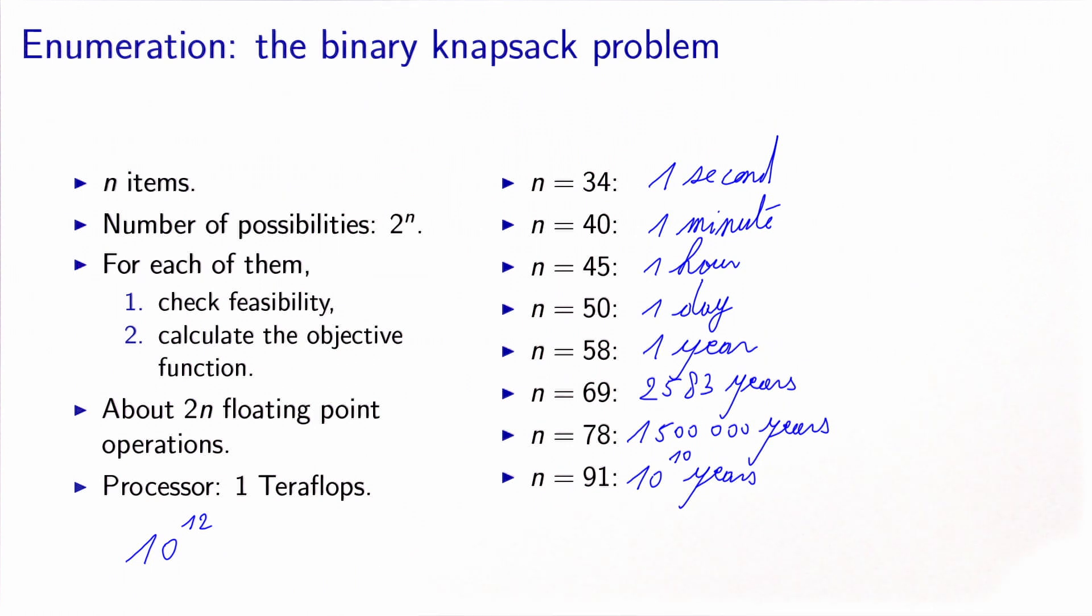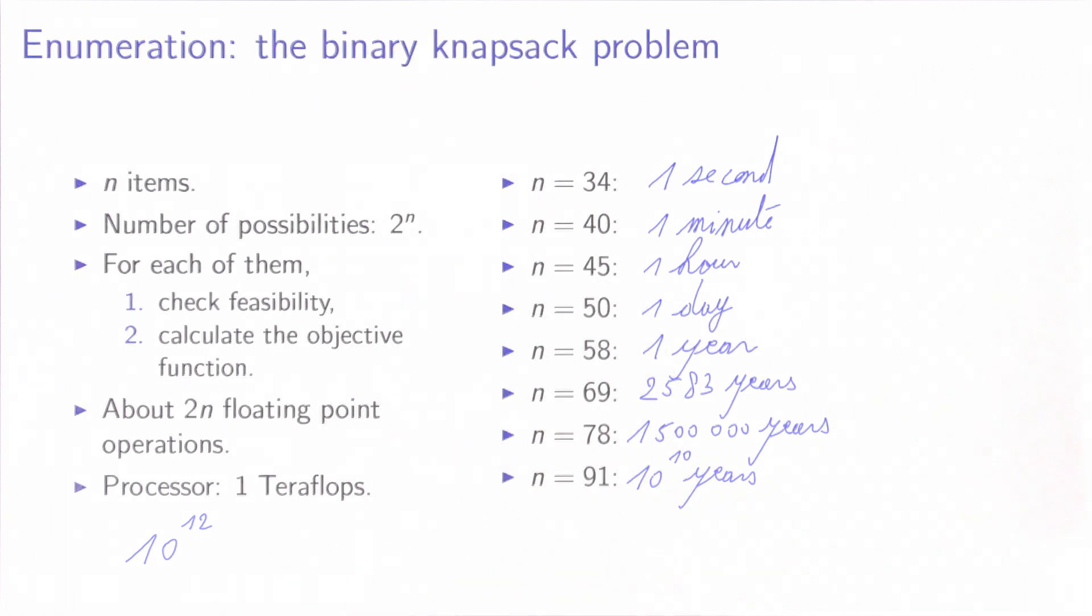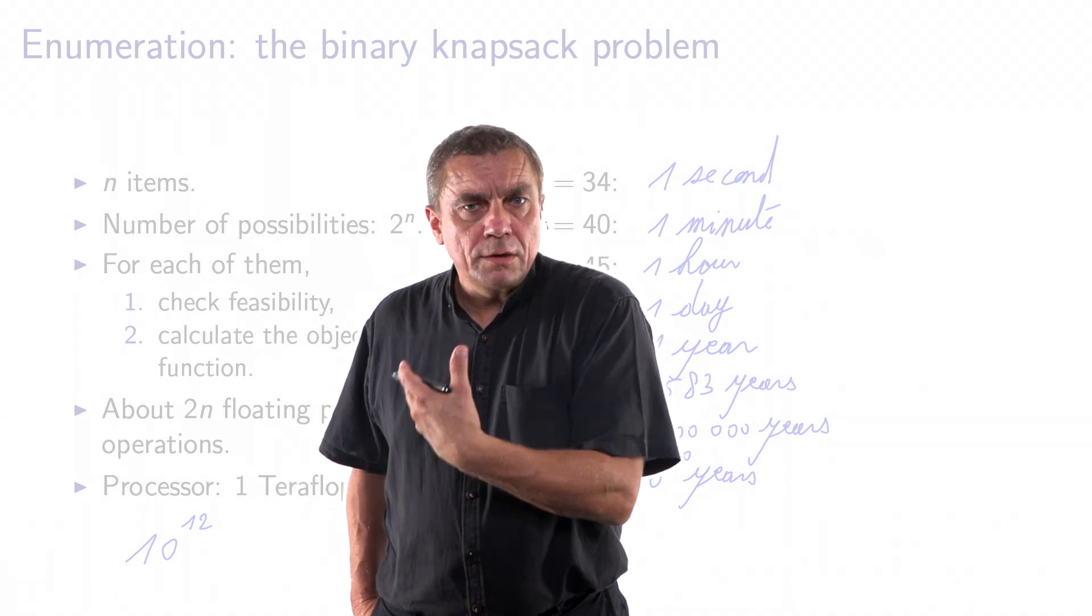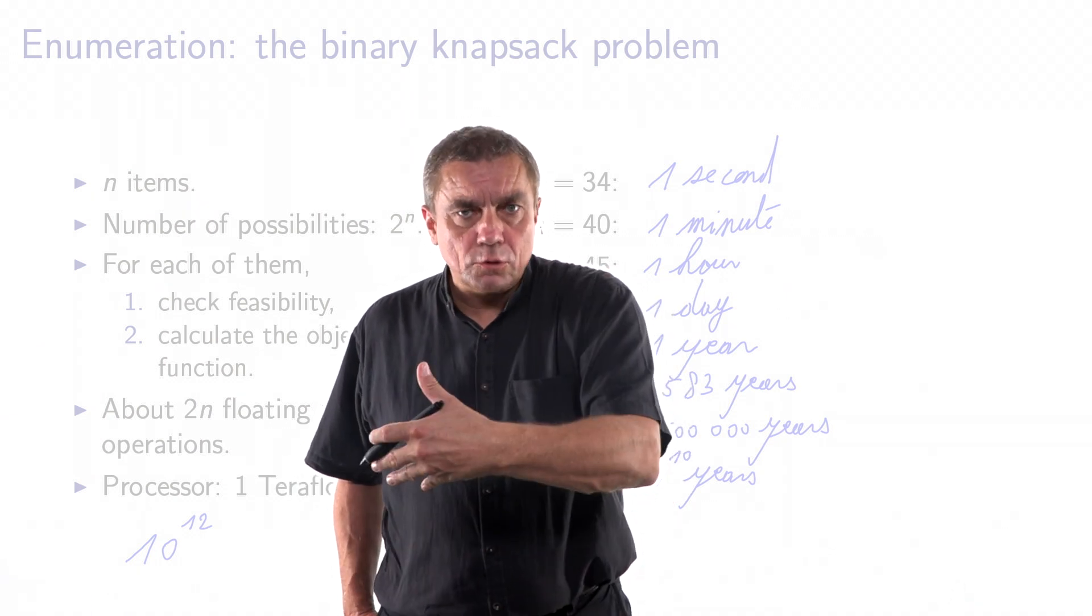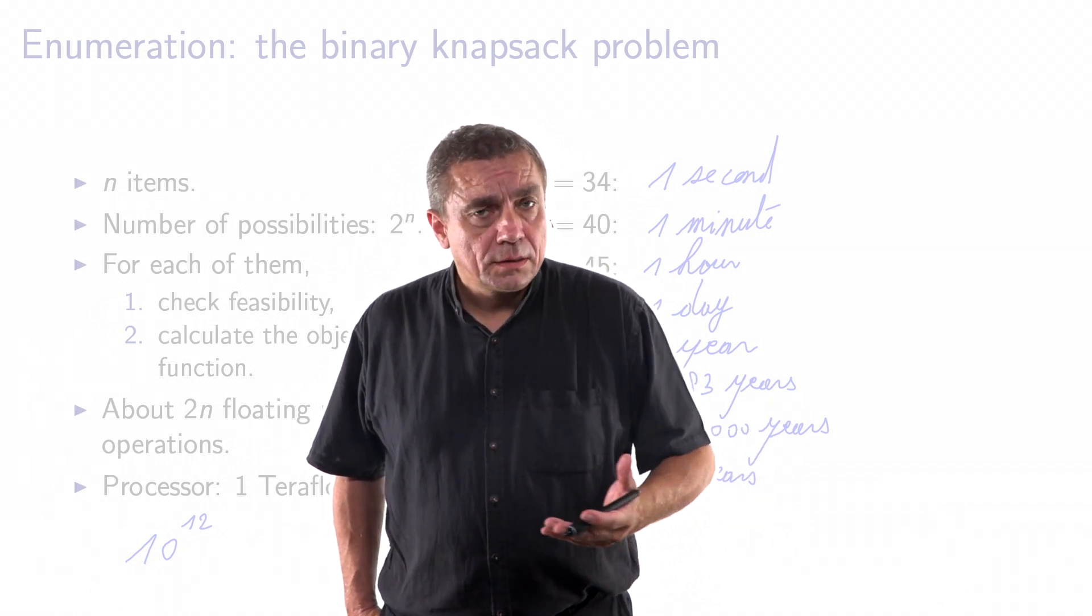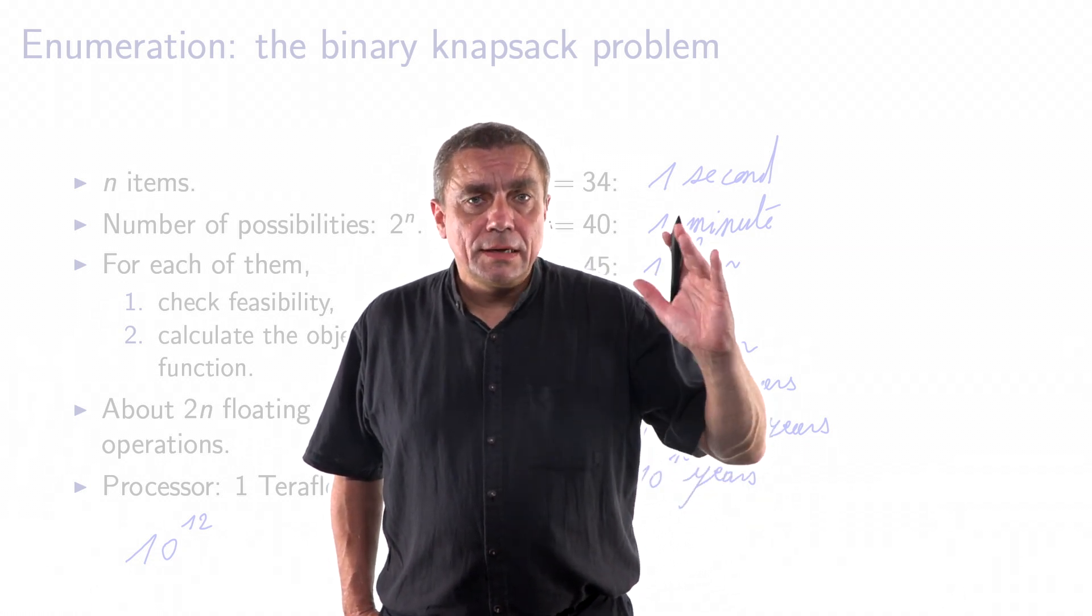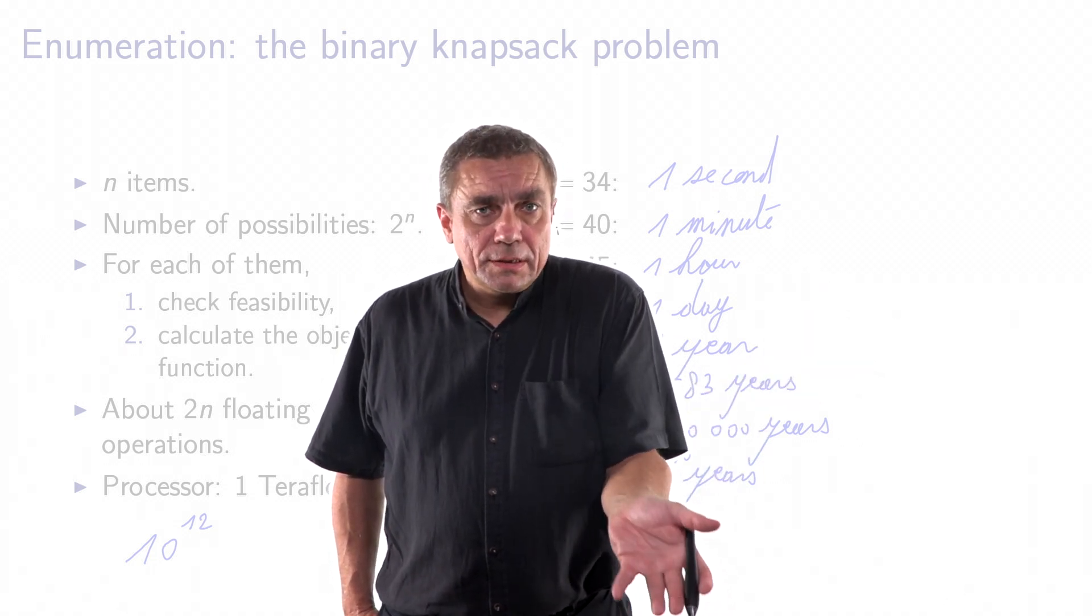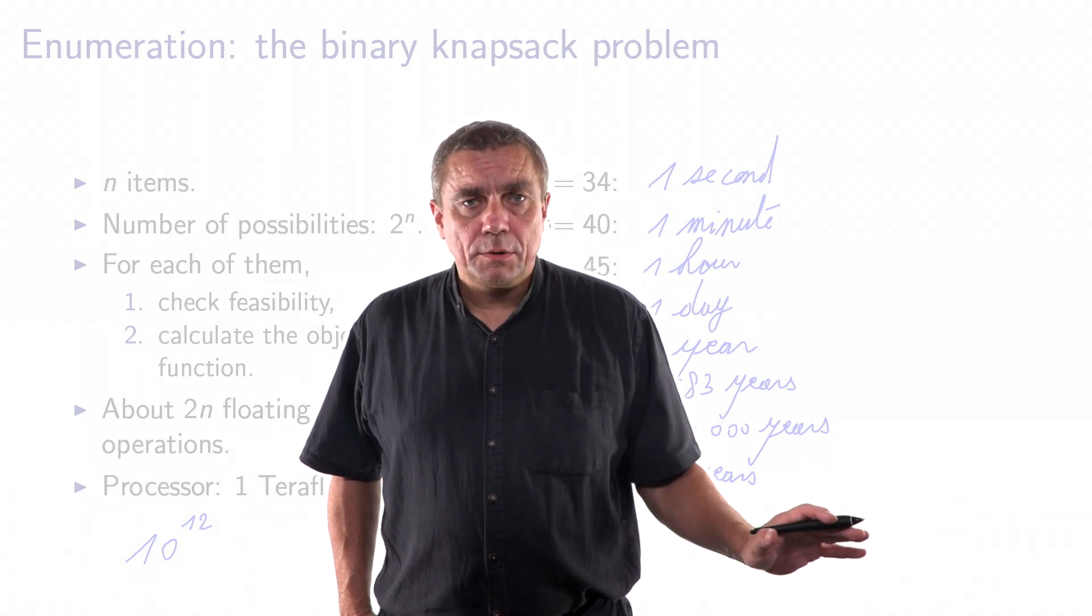It means that even if you have a fast computer, to solve problems which are relatively small size may take a huge amount of time, like the age of the universe. Remember that the knapsack problem may be used in portfolio optimization, where an investor decides which assets to put in the portfolio. And in this case, the number of possible assets is easily exceeding 100, so applying complete enumeration is clearly infeasible.